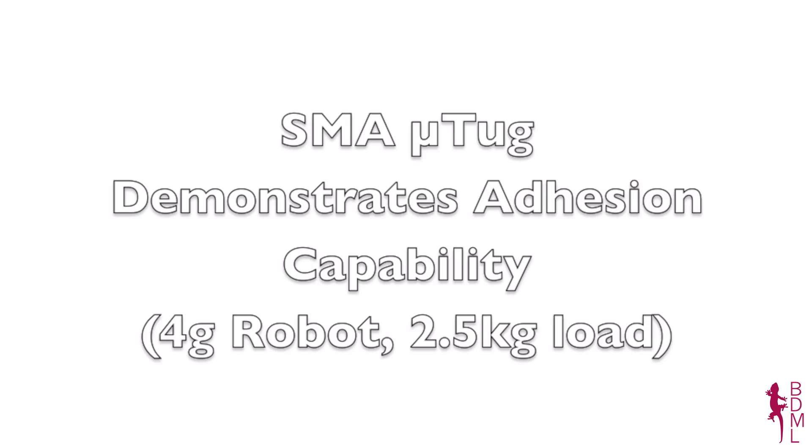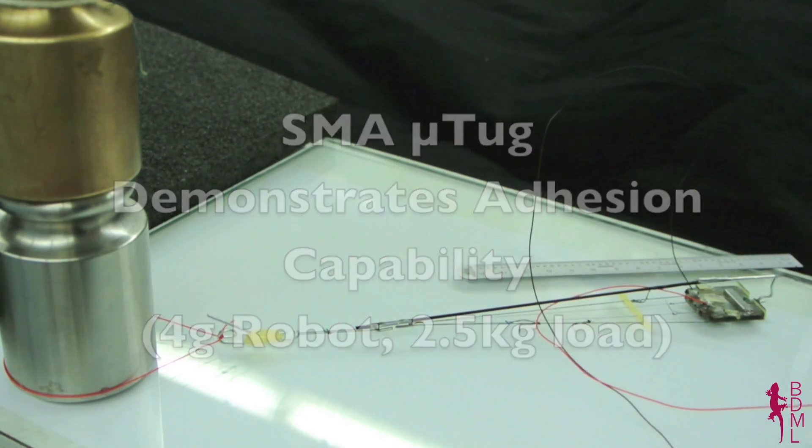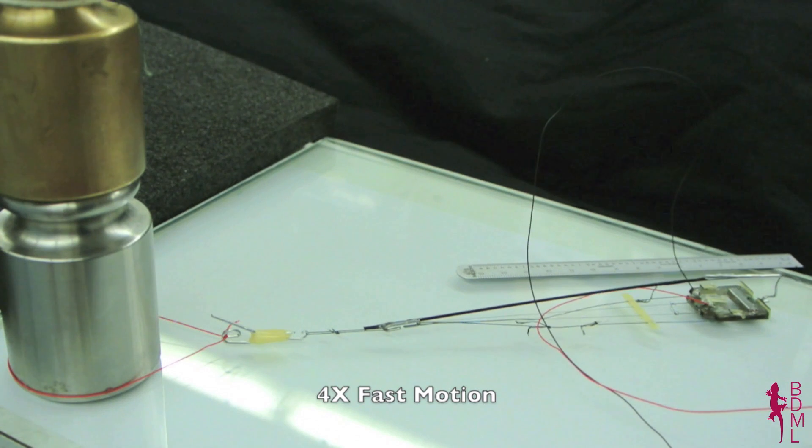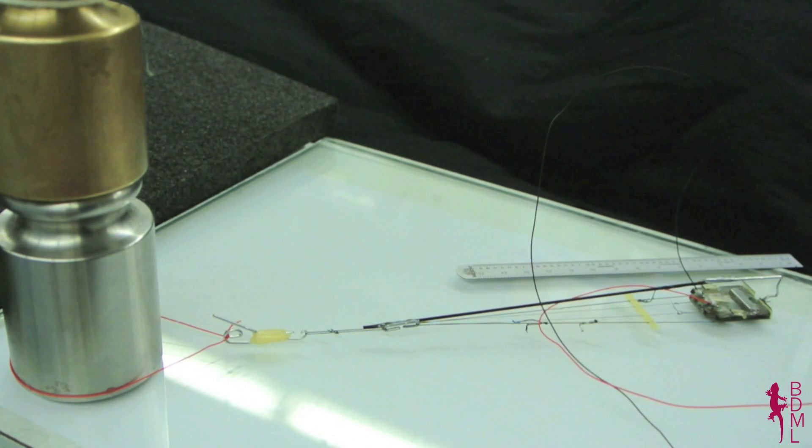Shape memory alloy, on the other hand, can harness the full force of the adhesives with more than 100 times the work per cycle of piezoelectric bimorphs, allowing this 6 gram prototype to move 2.5 kilograms here.